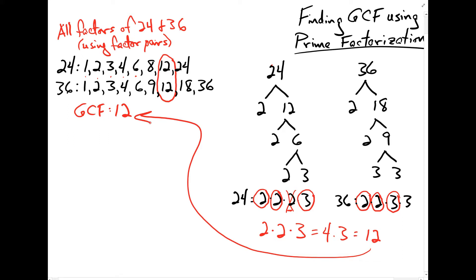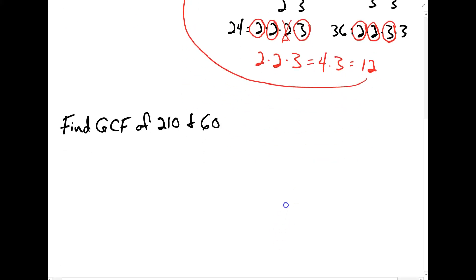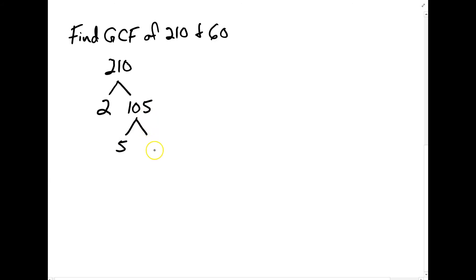Let's try another example using factor trees to find the greatest common factor. Let's find the greatest common factor of 210 and 60. First, I want to find the prime factorization of 210. 210 is even, so 2 is a factor: 2 times 105. 105 is divisible by 5: 5 times 21. And 21 breaks down to 3 times 7, both of which are prime. So 210 equals 2 times 3 times 5 times 7.